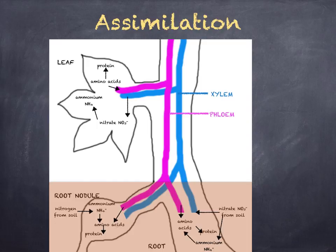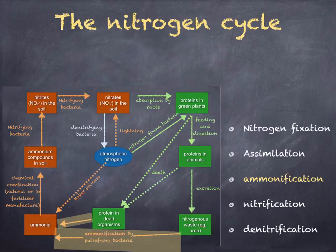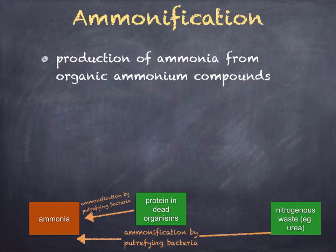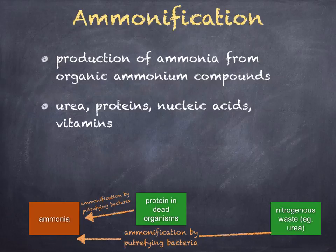Animals assimilate their nitrogen in the form of protein, which forms part of the plant or animals that they ate. Ammonification is the production of ammonia from organic ammonium-containing compounds. In nature, these include urea, proteins, nucleic acids, and vitamins. Decomposers — mainly fungi and bacteria — feed on these materials and release ammonia, which forms ammonium compounds in the soil.